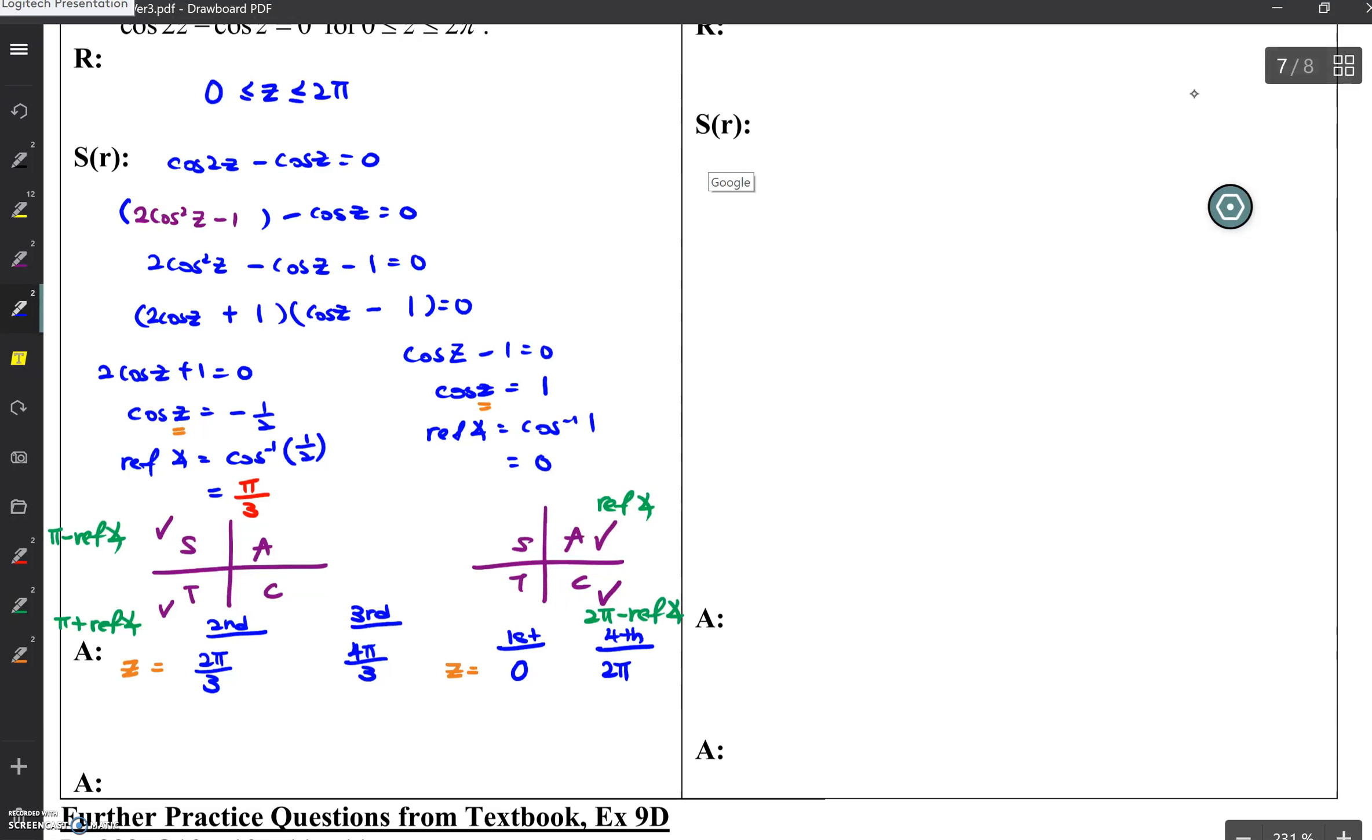So, final answer, since everything is not arranged in order, I'll keep it in order. So, it will be 0, 2 pi over 3, 4 pi over 3, and 2 pi. And that will be your answer for question 23. Is this clear?